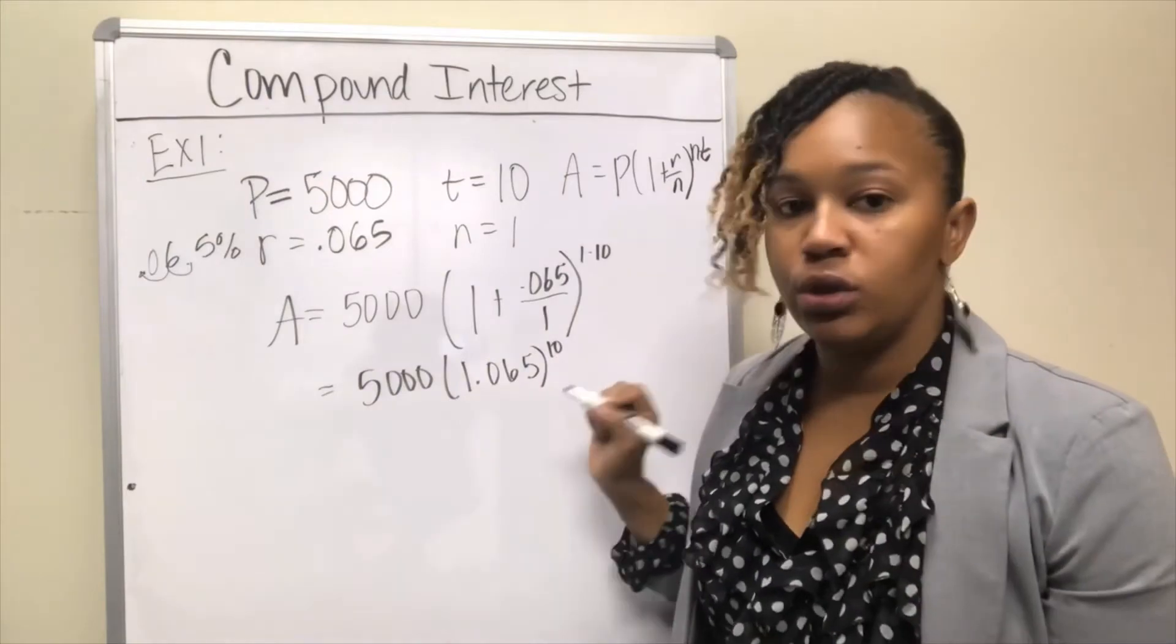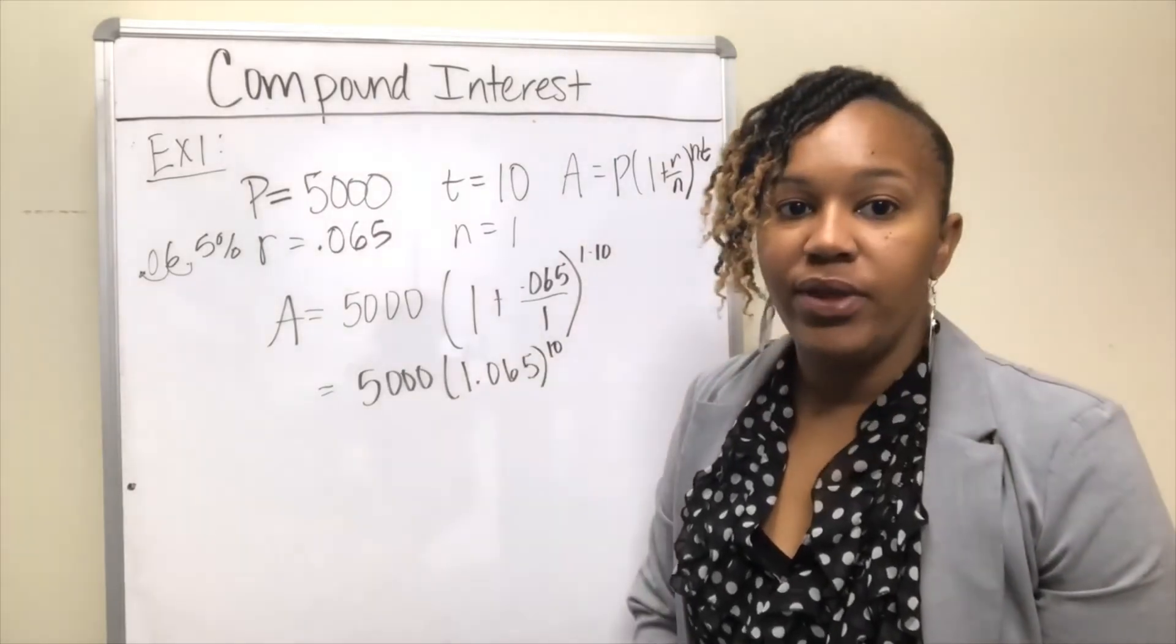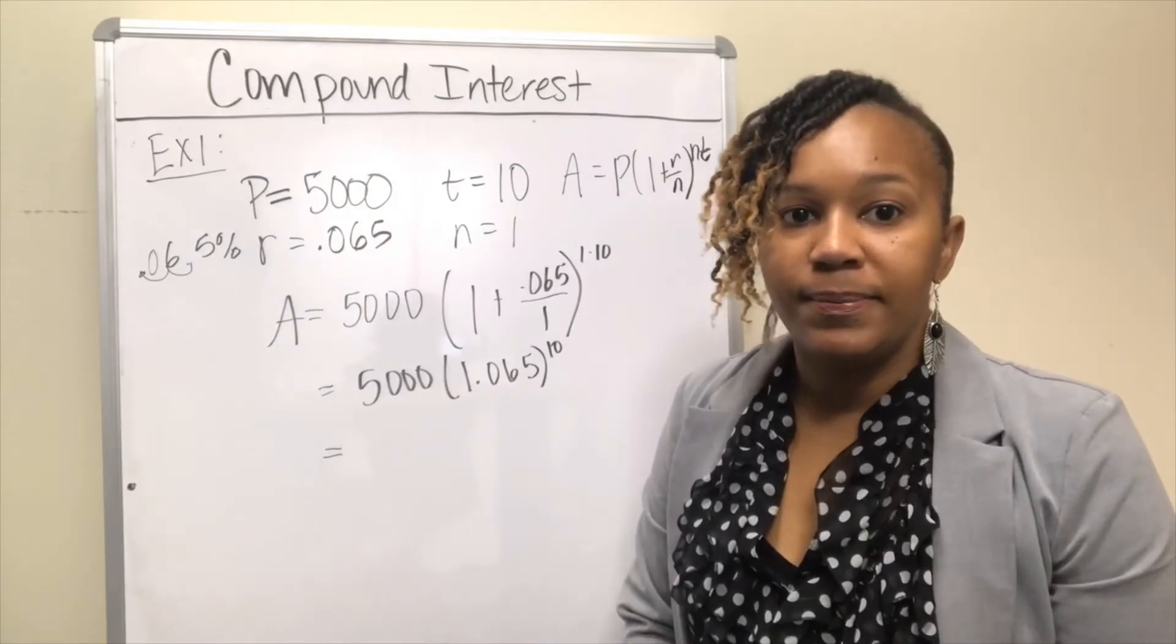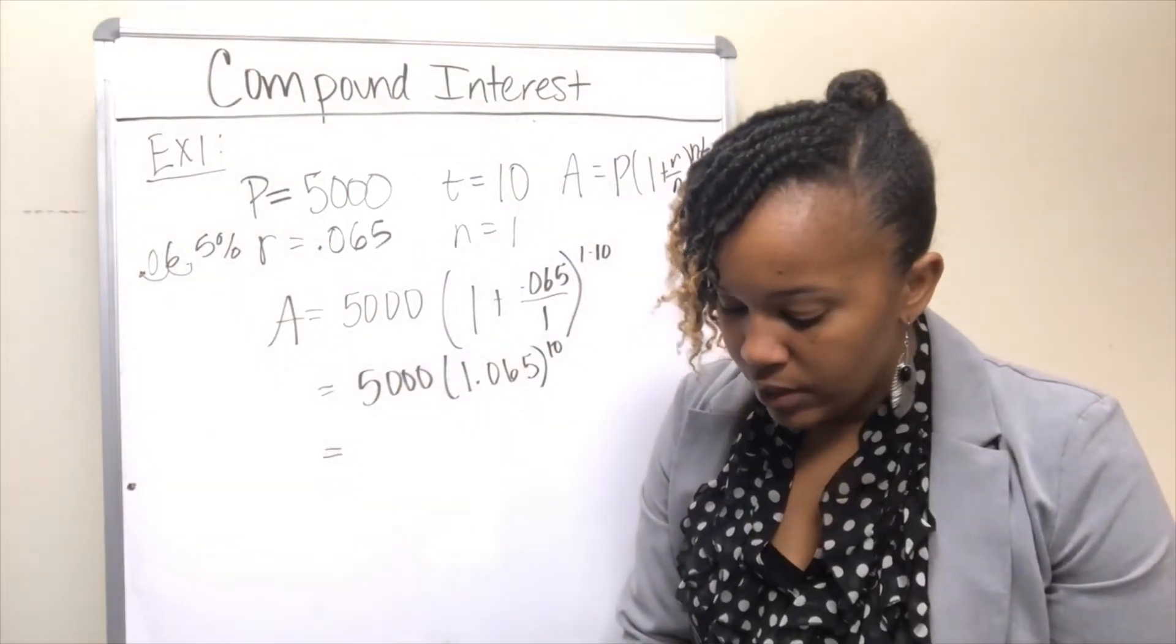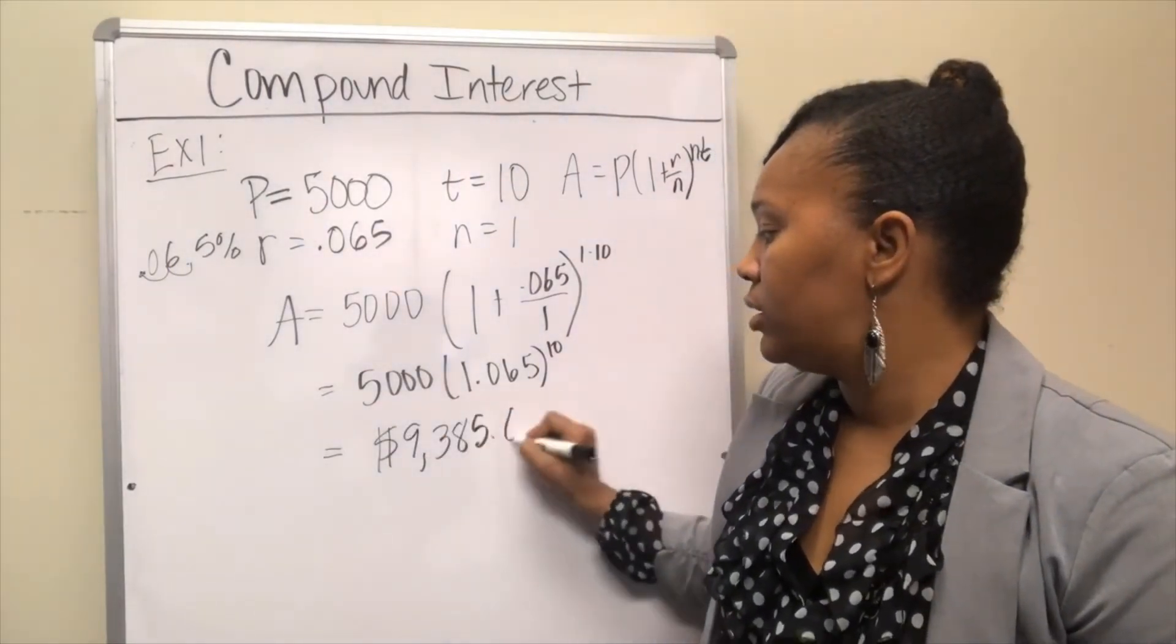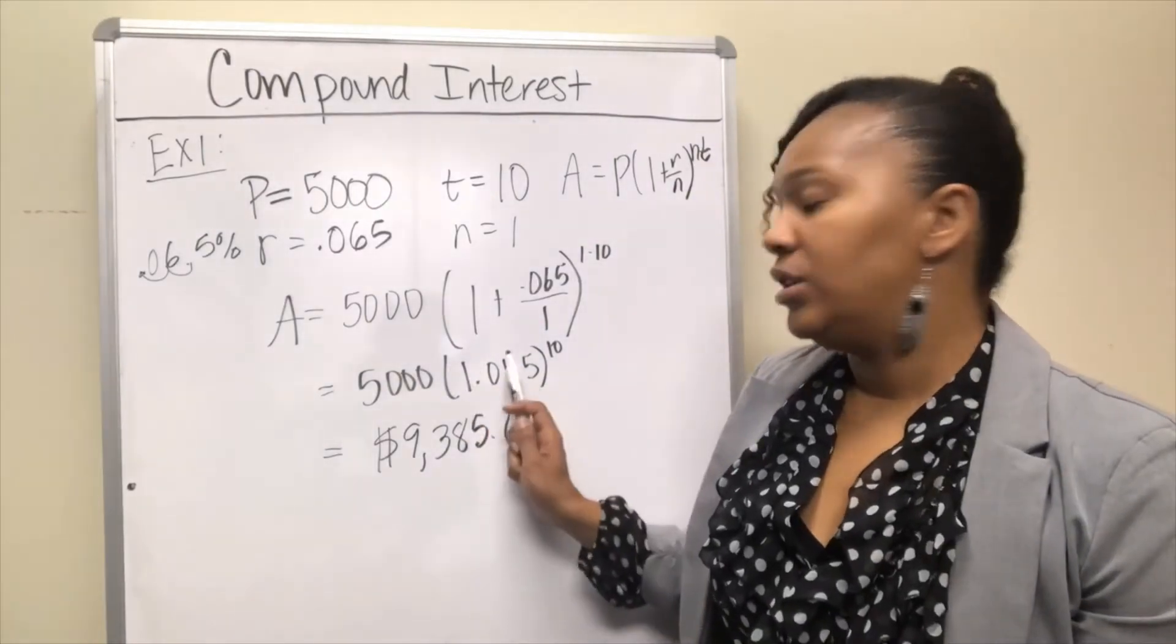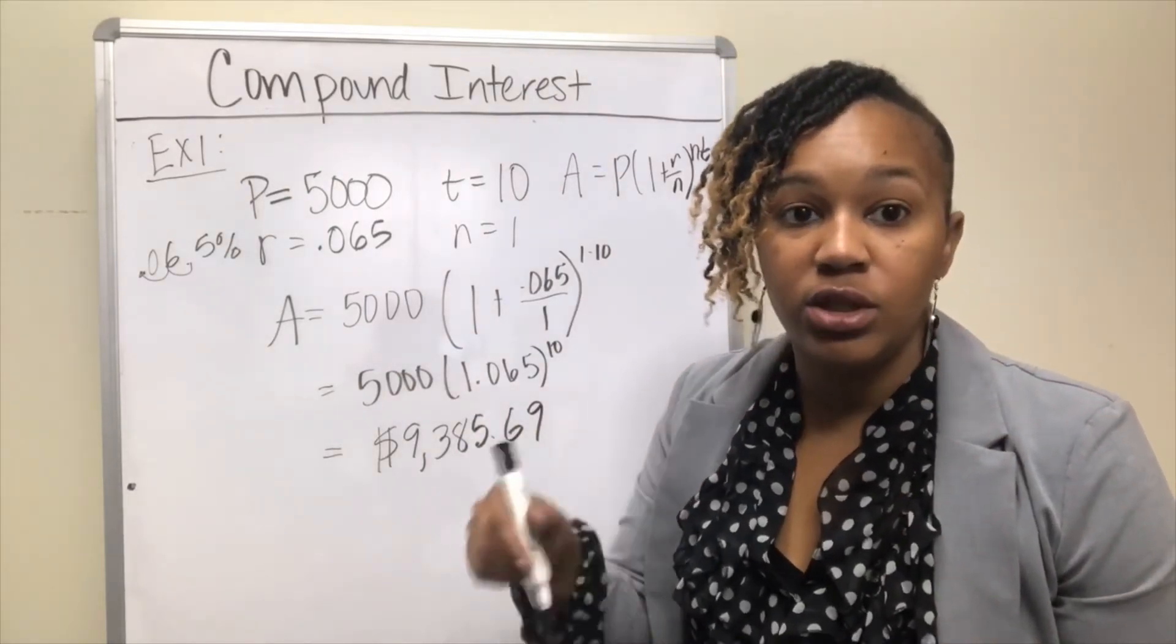You can actually enter it in straight like this, or you can do 1.065 raised to the 10th power times 5,000. Try to plug it in—I'm going to give you a moment and see if you can plug it in and see if you get what I get. You should have got $9,385.69. Is that what you got? If not, you need to make sure that you put the 1.065 in parentheses and raised it to the 10th power. If you have any questions about entering this in the calculator, make sure you put them in the comments below.